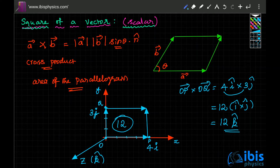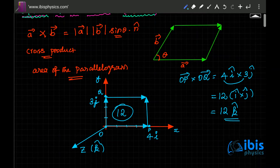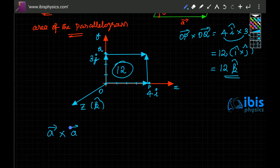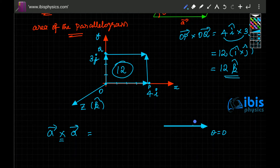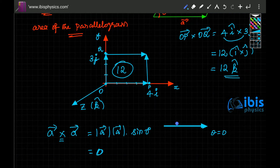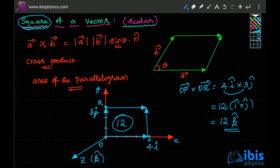This rectangle is a special case of a parallelogram. Now, to take the square of a vector, you multiply the vector by itself. If you use cross product, both vectors point in the same direction, so the angle θ = 0°. Therefore a cross a = |a||a| sin 0° = 0, meaning no area is formed and the result is always zero.